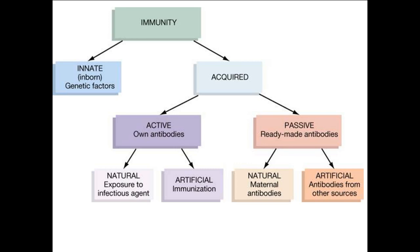The types of immunity I have listed here: innate is one that you are born with, and the one that we are really looking at today is acquired. Acquired comes in two forms — active and passive. Active is where you make your own antibodies, and passive is where the antibodies are given to you from an outside source.